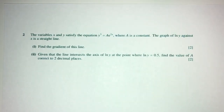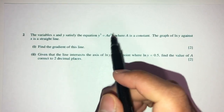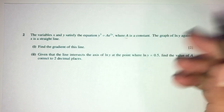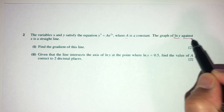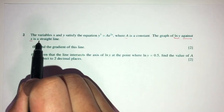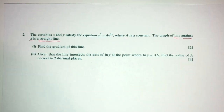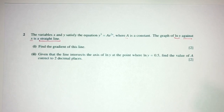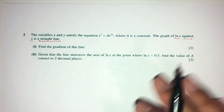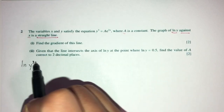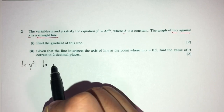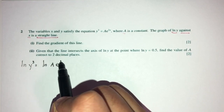Now let's move on to question number 2. Here we have variables x and y connected by this equation, and A is given as a constant. We know that if you plot ln of y against x you will have a straight line. Using the equation, how would you get ln of y against x? By observation, apply ln on both sides: you will have ln of y cubed equals ln of A times e to the x.